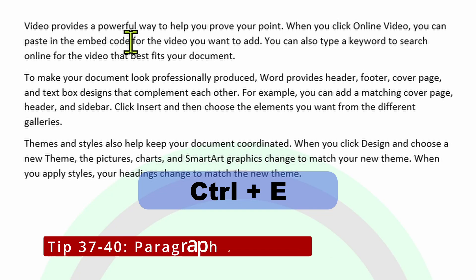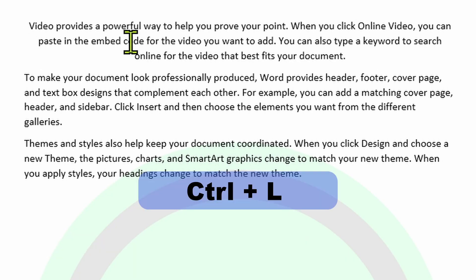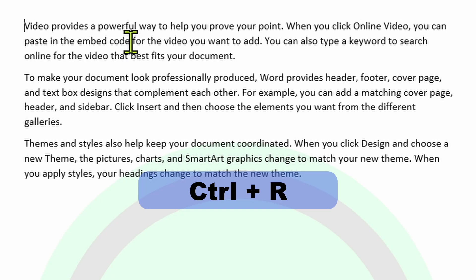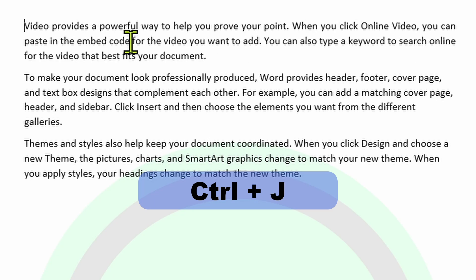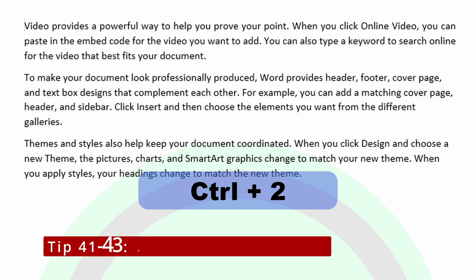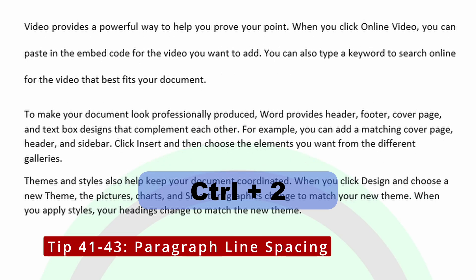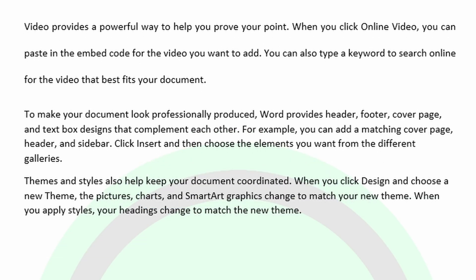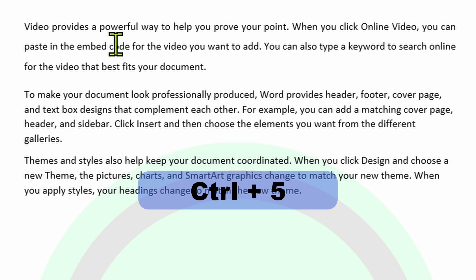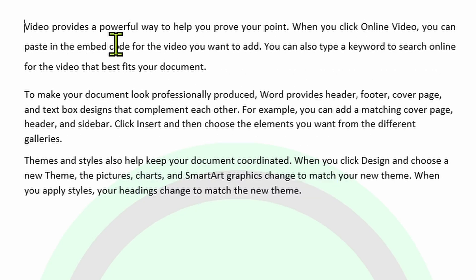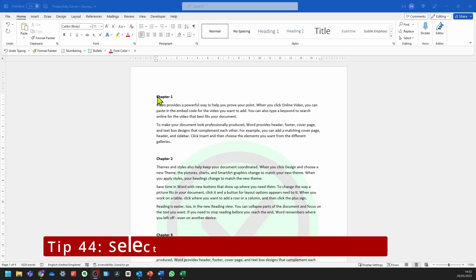You can center the paragraph by pressing Control E. You can left align it by pressing Control L. You can right align it by pressing Control R, and you can justify it by Control J. If you press Control and 2, it's going to set double spacing within the paragraph. If you press Control and 1, it's going to do single spacing. And if you press Control 5, it's going to do 1.5 spacing in between the lines in the paragraph.